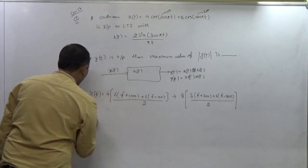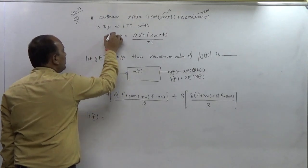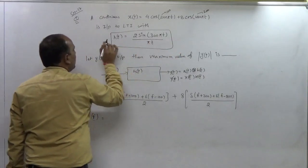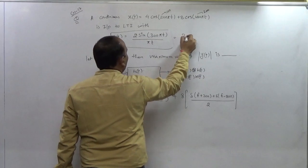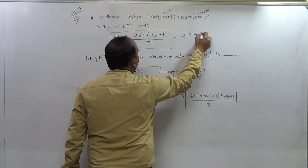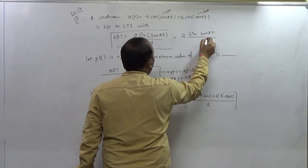And what will be the Hf? So Hf is because Ht is this one. The main thing here is because it is the Ht and you can write it as 2 sin(300πt) divided by πt. So just divide 300 here, 300πt, and also make it as 2 into 300.